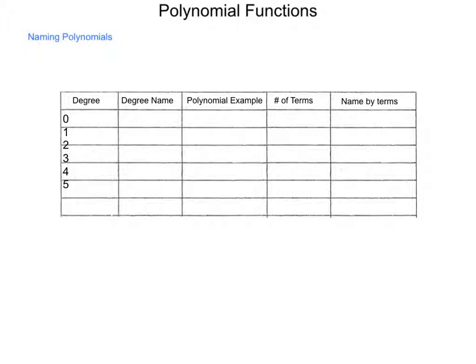What do different polynomials look like? Well, if a polynomial has a degree of zero, then it's called a constant. A polynomial with a degree of one is called linear, and a polynomial of degree two is called quadratic.